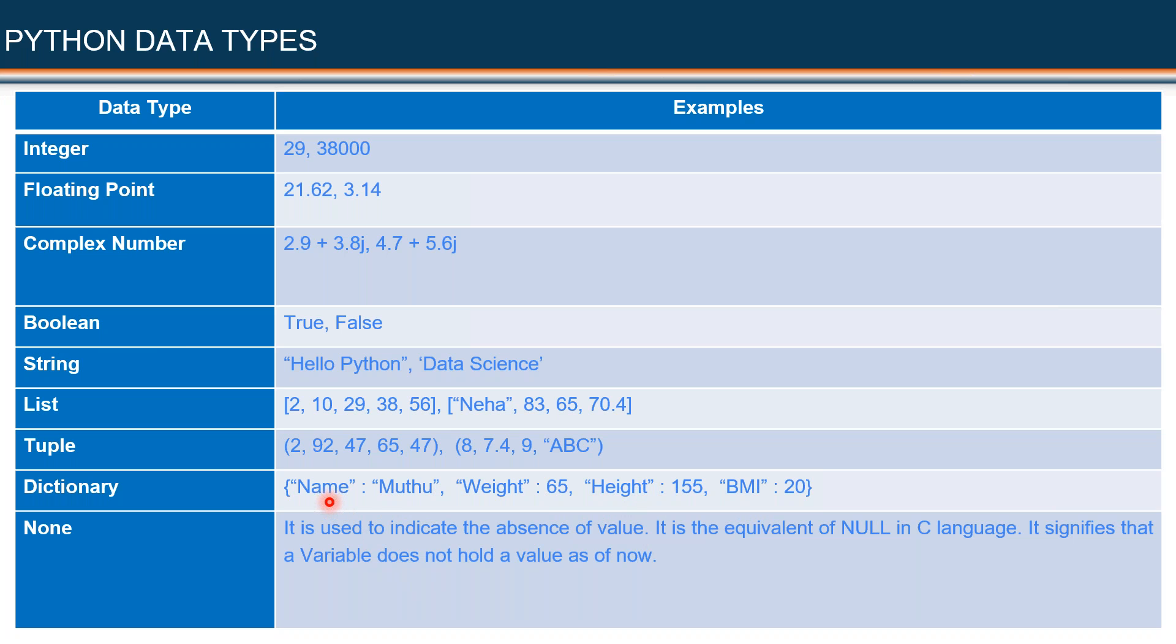This is known as the key, and this is known as its value. And the whole thing is known as a pair. And once again, this is the second pair, third pair, fourth pair. In the second pair, weight is known as the key and 65 is known as the value. Here, this is the key, this is the value. This is the key, this is the value.